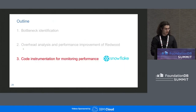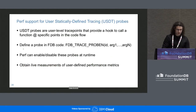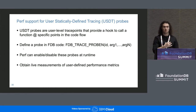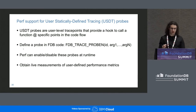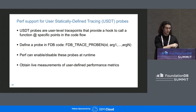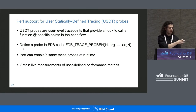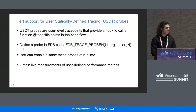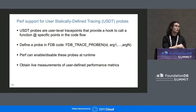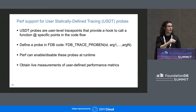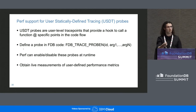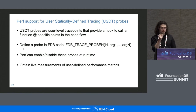The last use case is code instrumentation for monitoring performance. The Snowflake team added support for USDT probes — user-level trace points that provide a hook to call arbitrary functions within the code flow. A new macro, FDB_TRACE_PROBE, takes the probe ID and arguments for the hook function at a specific point in the code. With perf, you can enable and disable these probes at runtime. When disabled, the tracing cost is very low; when enabled, you pay a small performance cost but gain insight into what's happening in your code.